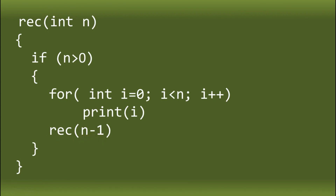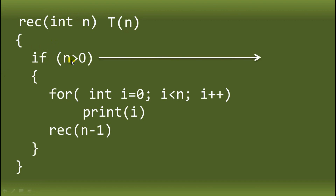If we're talking about a recurrence function, when we compute the time complexity, this function can be considered as T of N, where T is the time and N is the number passed to the function. The time complexity of the condition, counting each line of code independently, is considered as 1, because it only reads the condition once. For the for loop, the time complexity is N plus 1, or we can consider that as N if we remove the constant number — that is one rule in computing time complexity: we remove all constants.